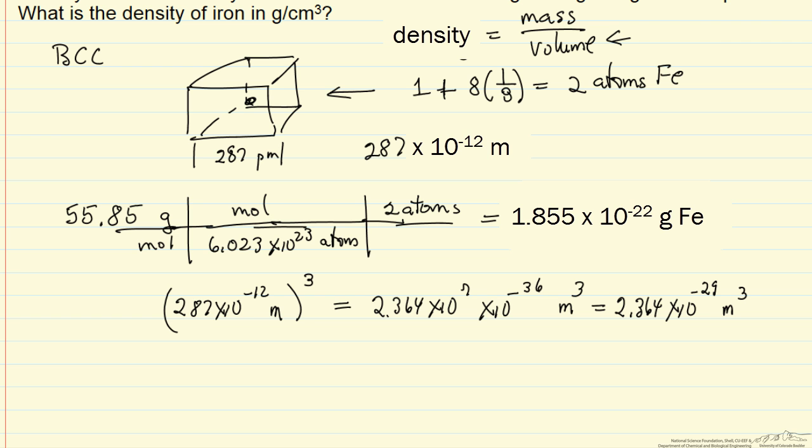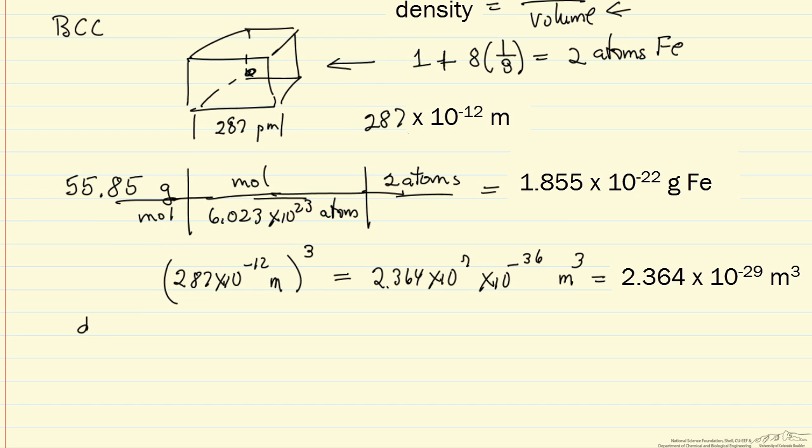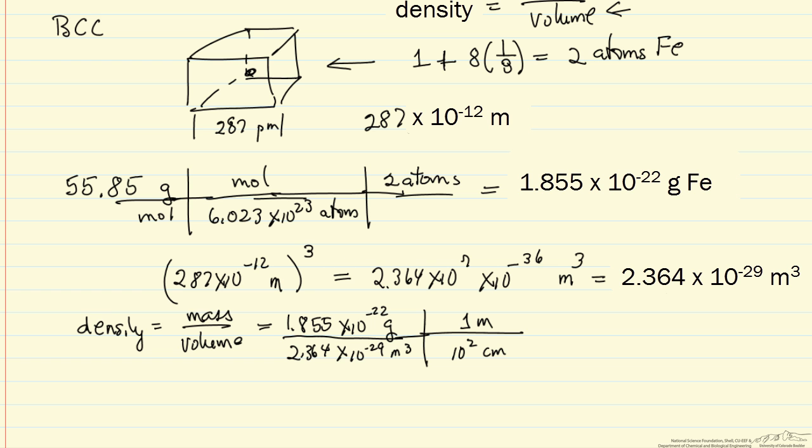Notice that we want this in cubic centimeters, so we'll do that when we calculate the density. The density is the mass over the volume. Let's now convert units. Notice 1 meter is 10^2 centimeters, so 1 meter cubed is 10^2 centimeters cubed.